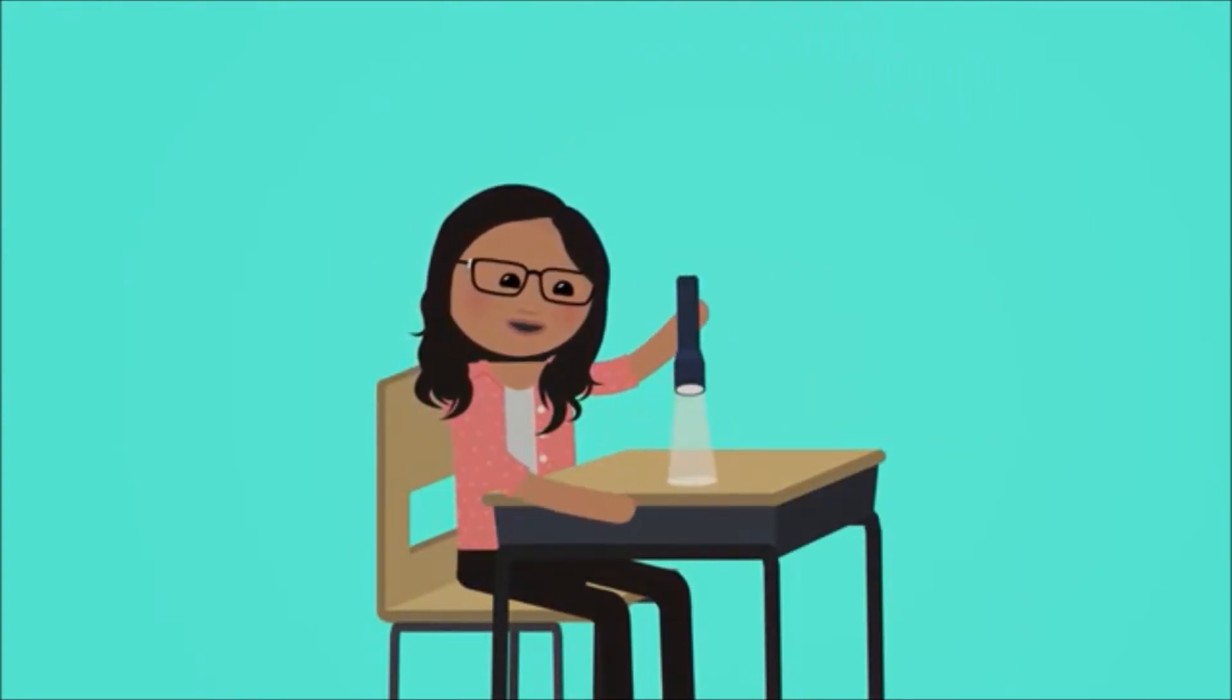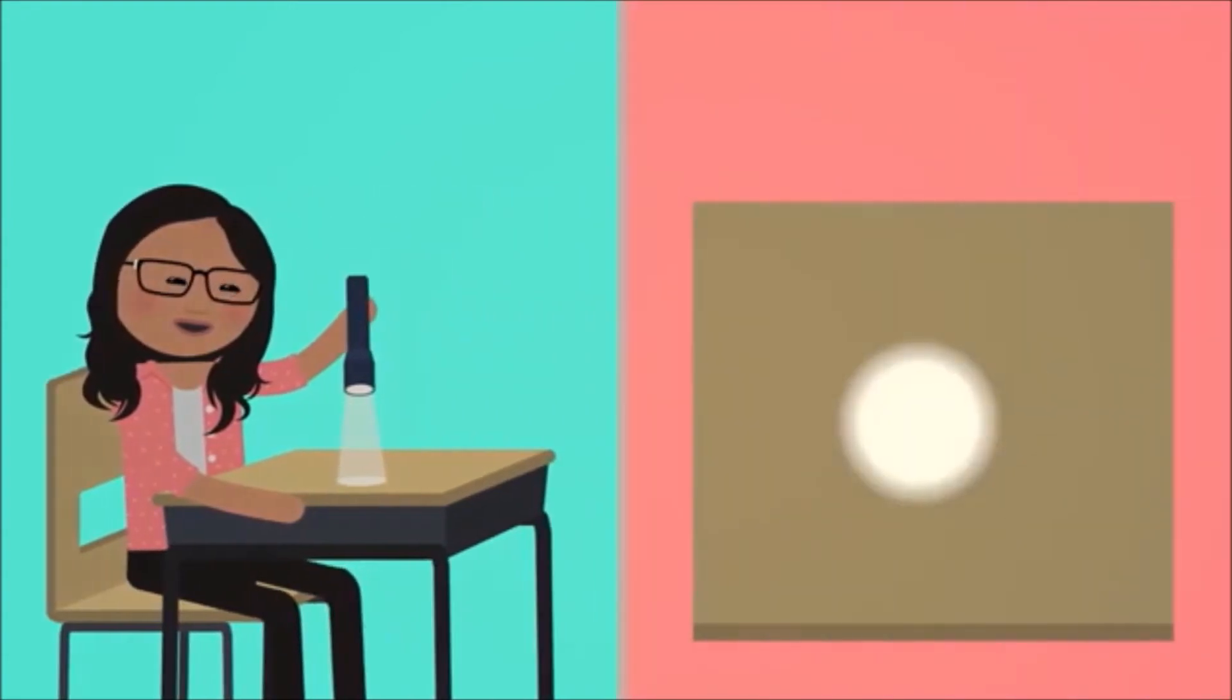If you turn the flashlight on and point it straight down onto your desk, you'll see a small, bright, concentrated circle of light. That's kind of how sunlight hits the northern hemisphere during the summer. Bright and intense.